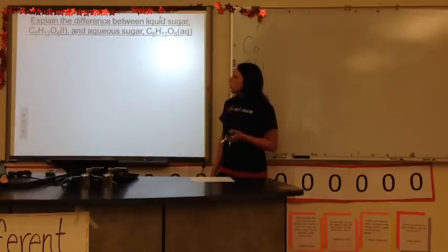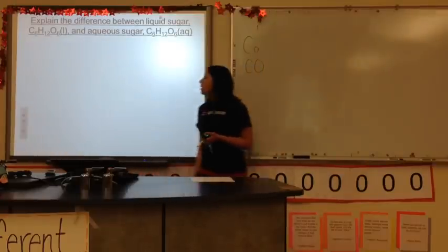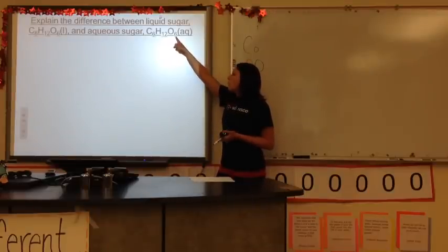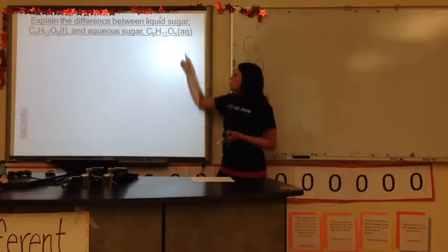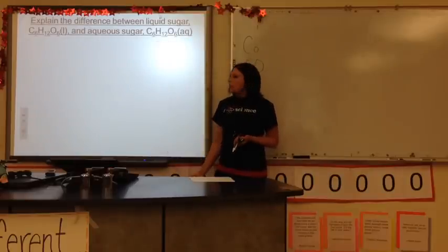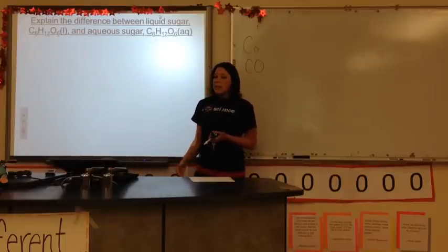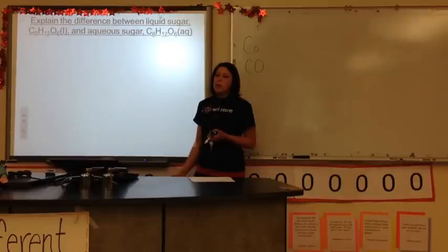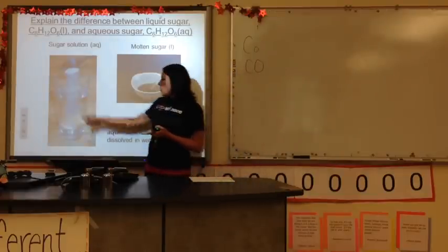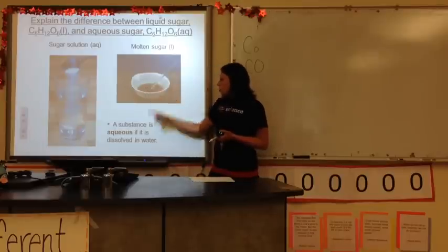Explain the difference between liquid sugar, C6H12O6 with an L after it, and aqueous sugar, C6H12O6 with an AQ. This means it's dissolved in water, so this one is simply just sugar water. The first one is actually sugar that's been heated to its melting point and so now it's in a liquid form. They would look very different. Here's our sugar solution and here is liquid sugar. You may have seen it before if you've tried to make caramel.